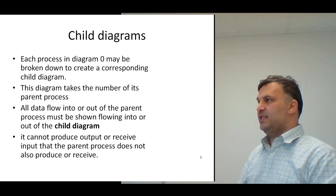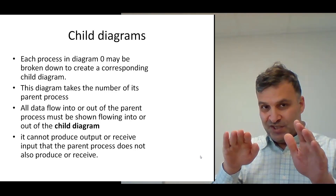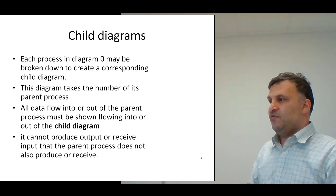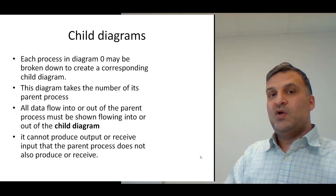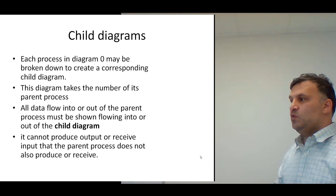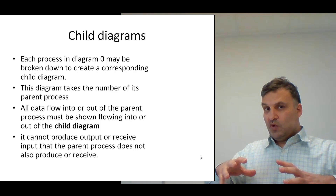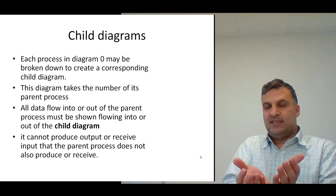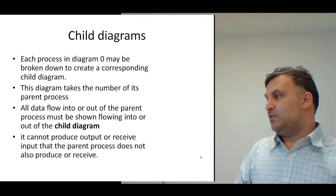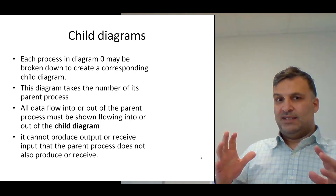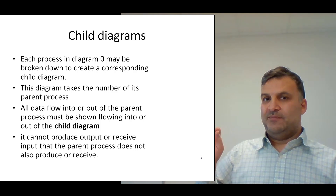Each process in diagram zero may be broken down to create a corresponding child diagram, so we have one diagram for each child process. This diagram takes the number of its parent process, so the diagram number is related to the parent process number. All data flows into or out of the parent process must be shown flowing into or out of the child diagram. It cannot produce output or receive input that the parent process does not also produce or receive, though we can add some data sources or error messages.